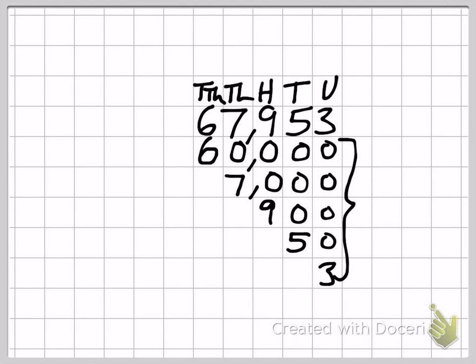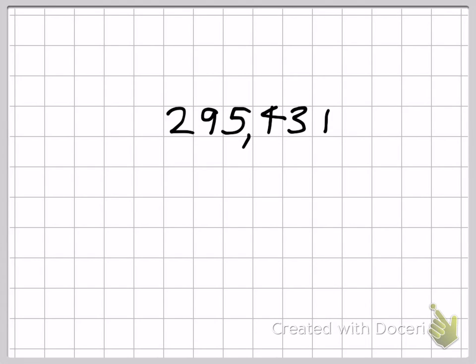So adding all of those back together again would give us the number we started with. Six digits is no harder. We have units, tens, hundreds, individual thousands, tens of thousands, and hundreds of thousands. We've just got an extra digit.